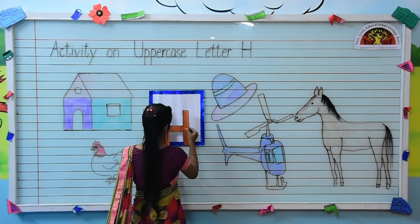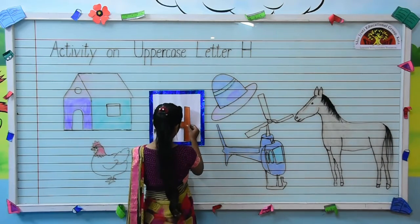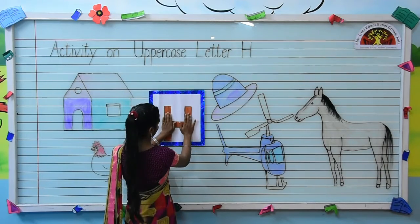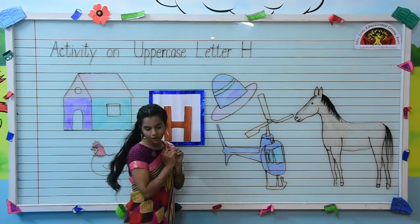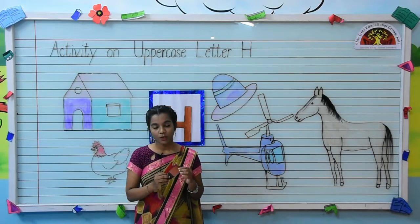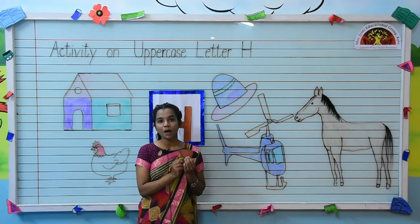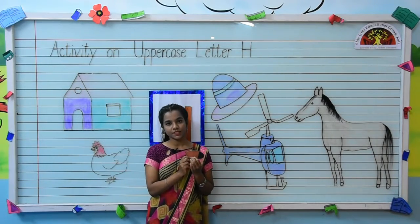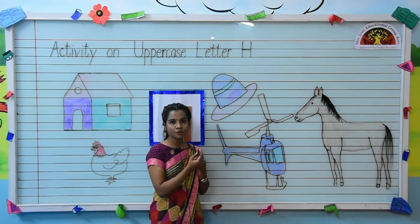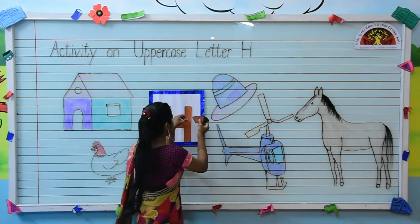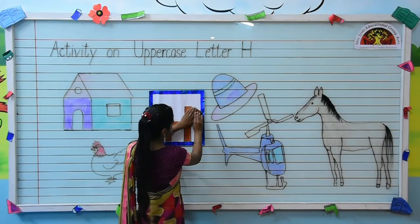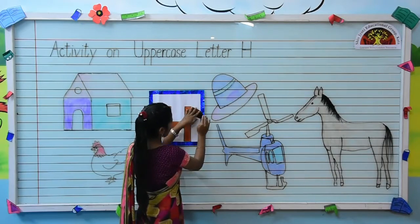Paste it like this. Now, what is this? This is a mouth — mouth of a horse. Stick it like this.